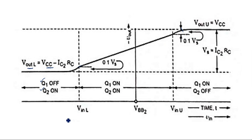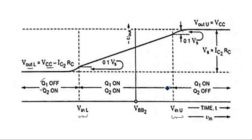This linear region occurs between certain voltage values — a lower input voltage limit and an upper input voltage limit. Within this range, the output voltage exactly follows the input voltage.